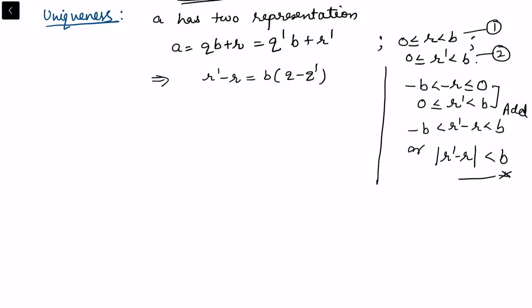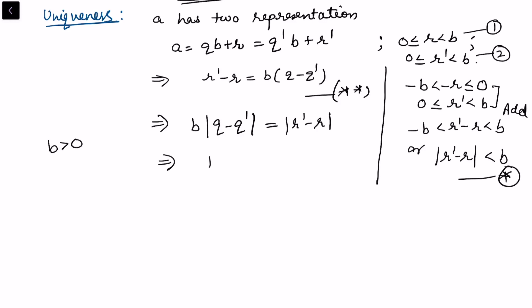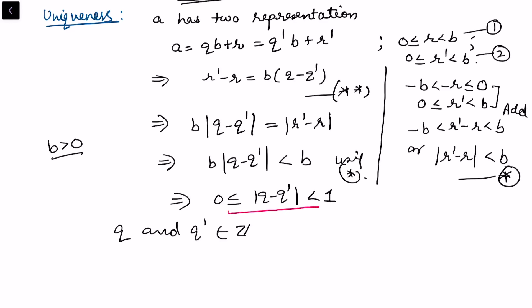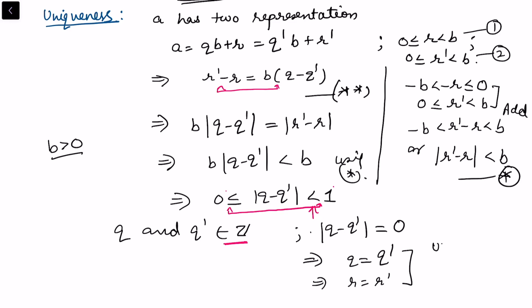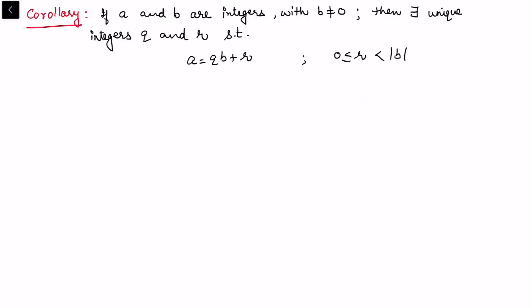This means |r' − r| < b. From the equation r' − r = b(q − q'), we get b|q − q'| = |r' − r| < b. Since b is strictly positive, dividing gives |q − q'| < 1. Since q and q' are integers and |q − q'| is a non-negative integer less than 1, we must have |q − q'| = 0, so q = q'. Substituting back gives r = r', proving uniqueness.